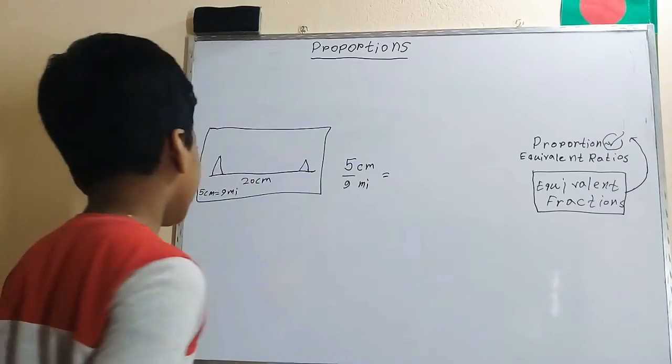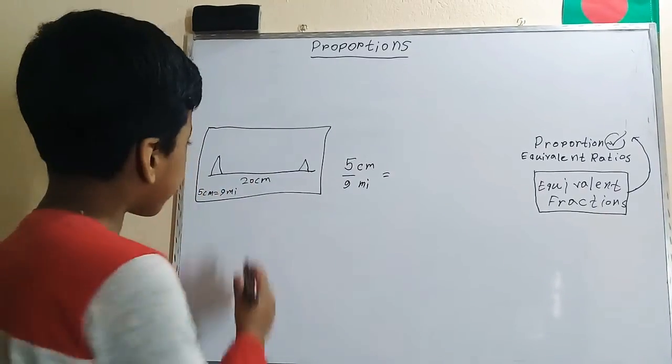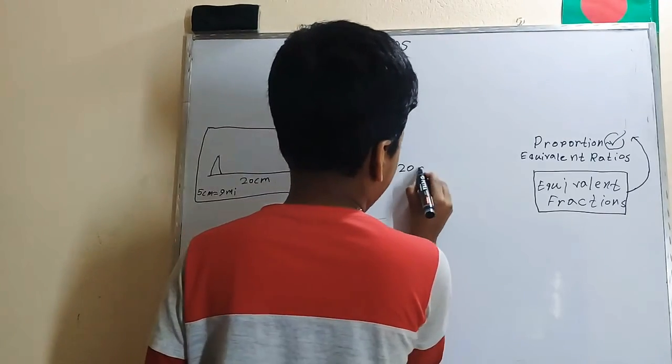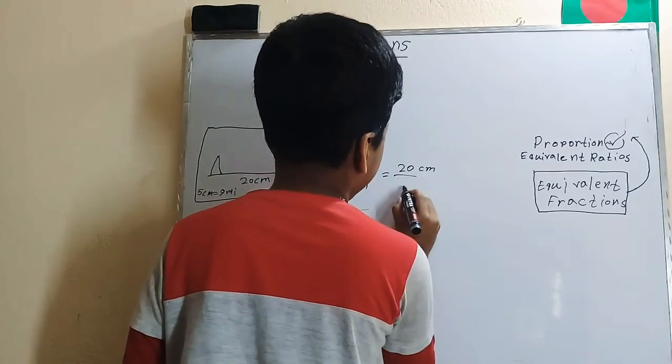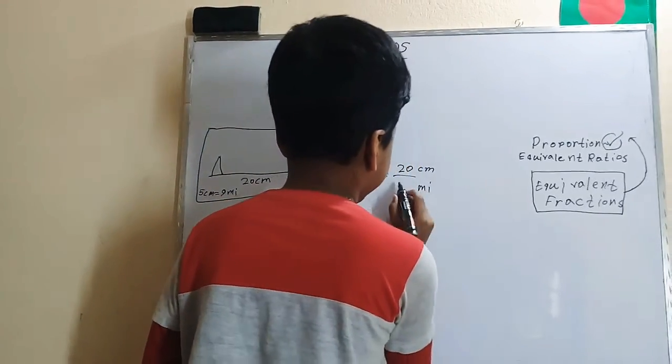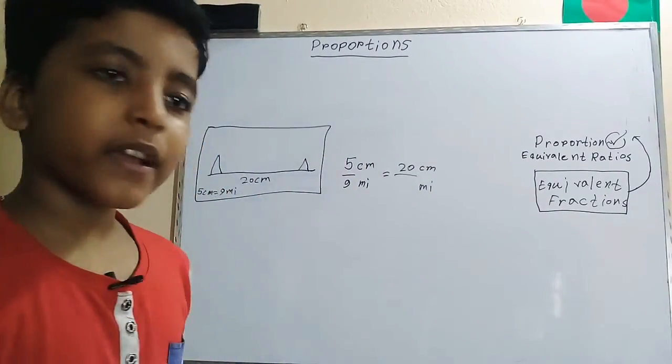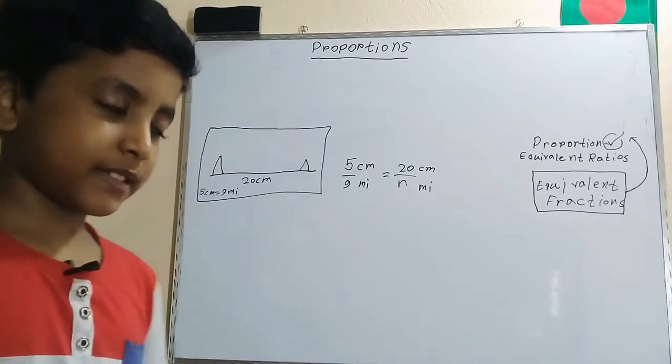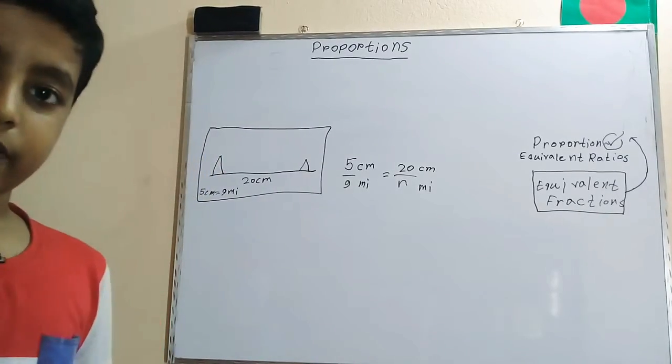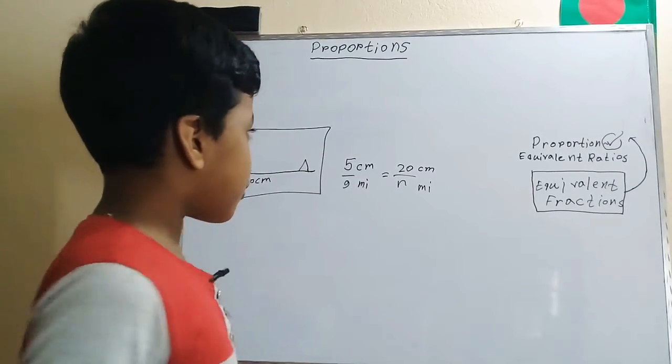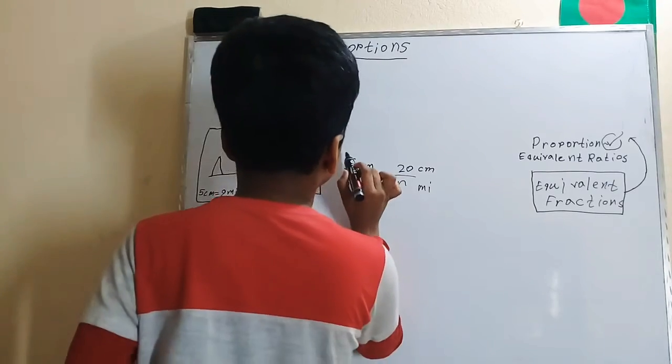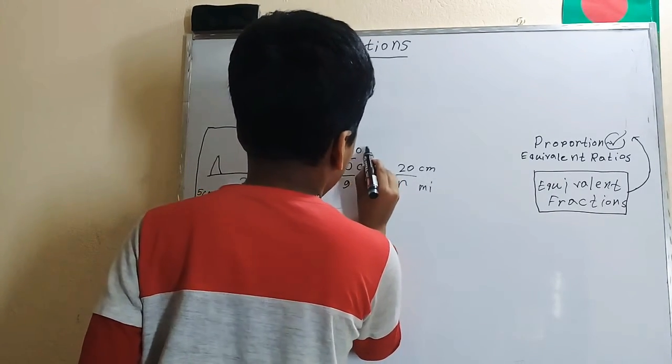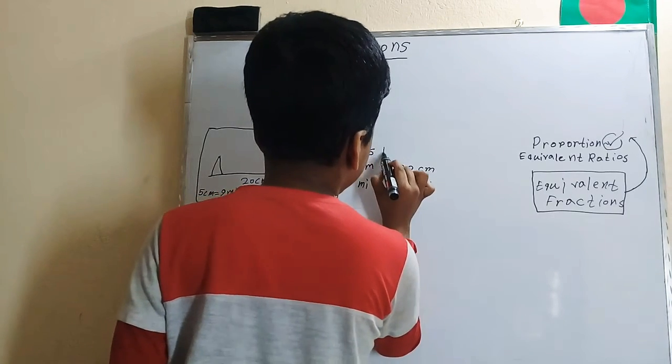So now let's find out how many miles it is from these mountains. Let's set up a proportion: five centimeters over nine miles, we know this. Now there's 20 centimeters away, so this will be on top, and the number of miles is unknown, so we can just put a letter N there to stand for the missing number. Now we need to solve it by a procedure called cross-multiplication.